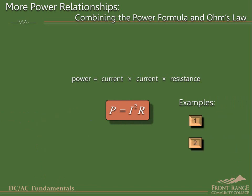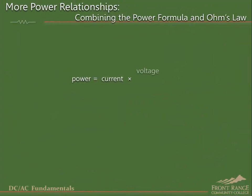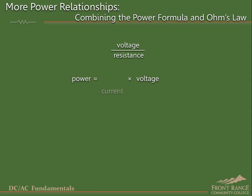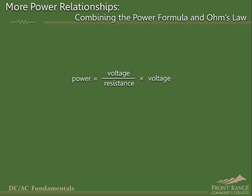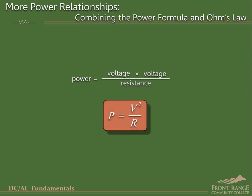A third useful relationship can be obtained by first returning to the original power formula: power equals current times voltage. This time, we will substitute for current using the form of Ohm's law that is solved for current. Making this substitution, we see that power is equal to voltage divided by resistance times voltage, which is the same as voltage times voltage divided by resistance, or power equals voltage squared divided by resistance. Here are some examples.